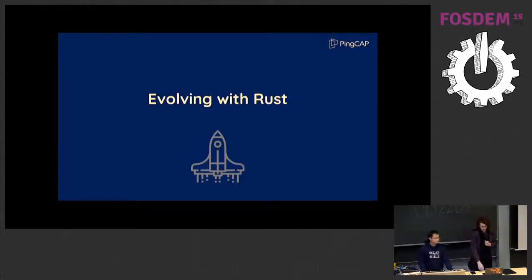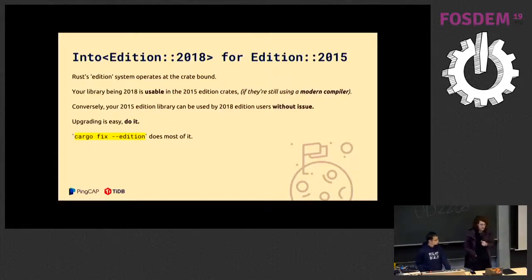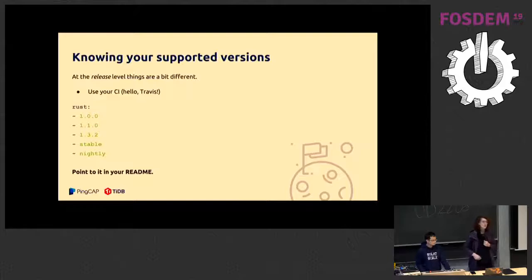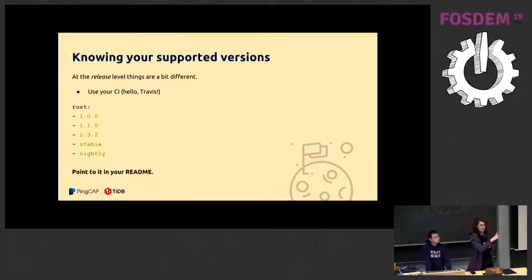How do you get to Rust 2018 from Rust 2015? It's really easy because it operates on the crate boundary — not on some other boundary like Python does. You can just use cargo fix and it will do most of the work for you. If you're on 2018, you don't need to worry about people on 2015 — they can still use your stuff with a recent compiler. Travis lets you configure testing on multiple versions. Please test on Nightly — it's very important. We want to know when things break.